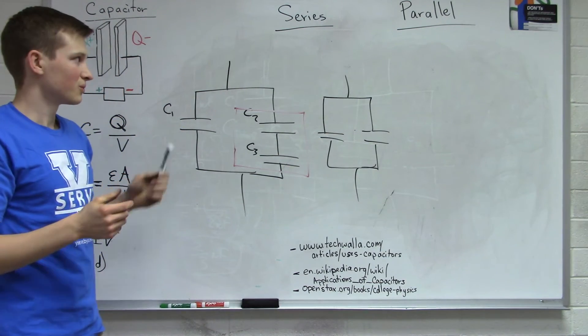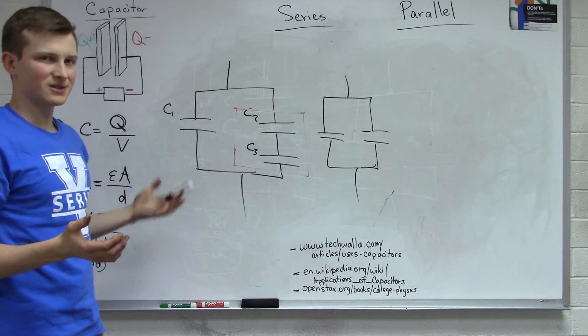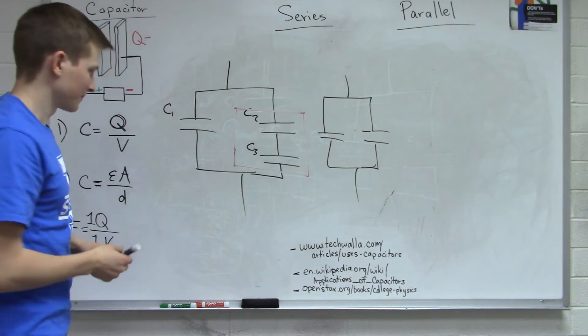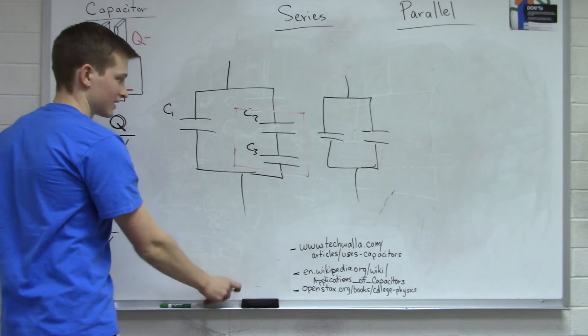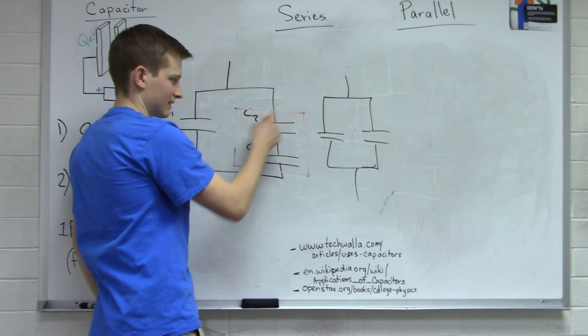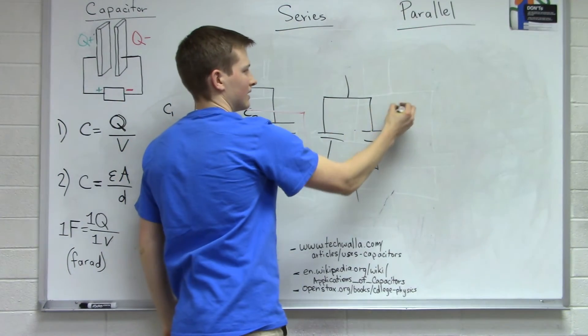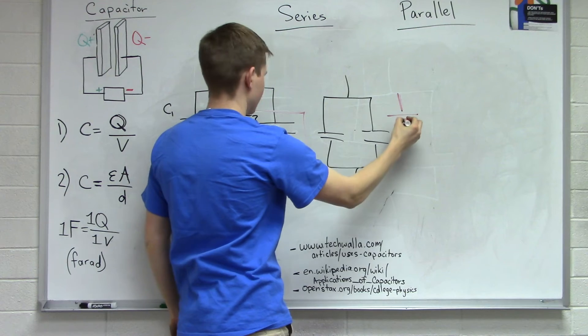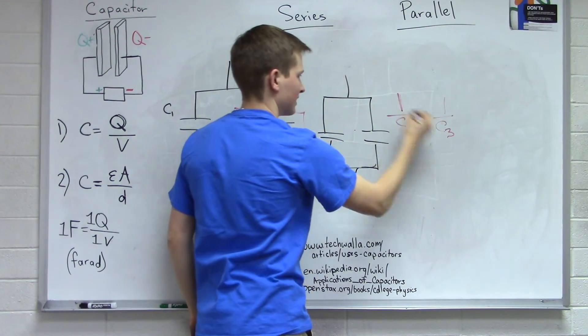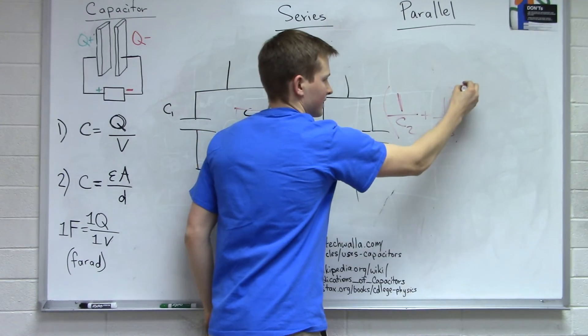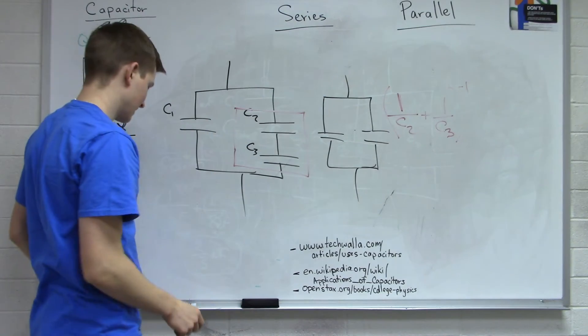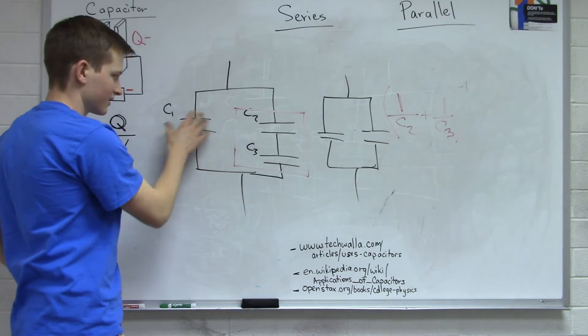So really what we have here is capacitors in series and in parallel. And we know the formulas for solving both. So let's first solve for this part. The capacitance of this would be 1 over C2 plus 1 over C3 to the negative 1.